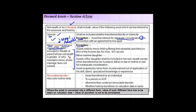The minor's assets are included in the wealth of the parent whose net wealth is greater, or who maintains the minor where the marriage does not subsist. So there are two parts: one is transfer of an asset by an individual — the green portion on the slide — and the rest will be discussed separately in subsequent slides.